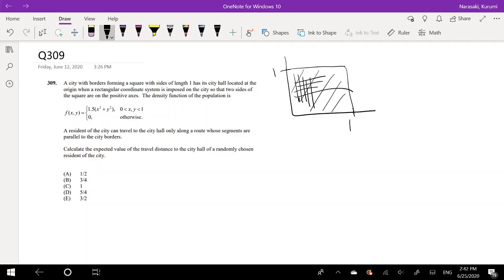So again, if I live right here, the only way I can get to the city hall, which is right here at the origin, is I have to either go this way and down, or I can either go this way and down, or I can just take many different routes. But either way, it's the expected value of x plus y.